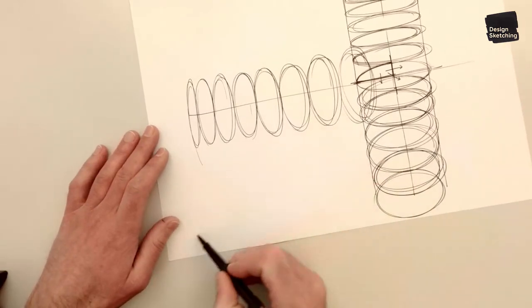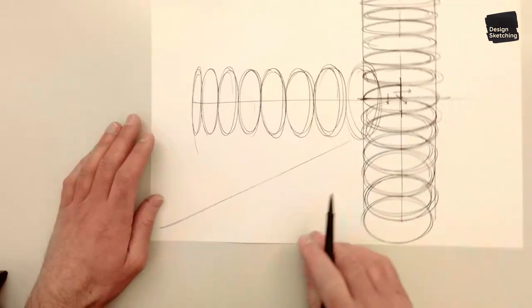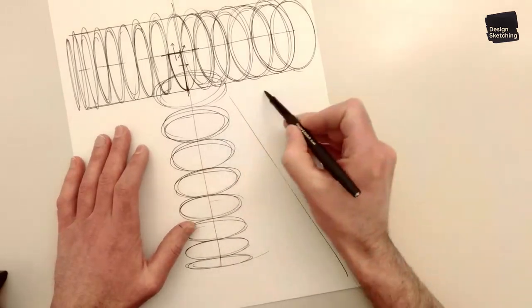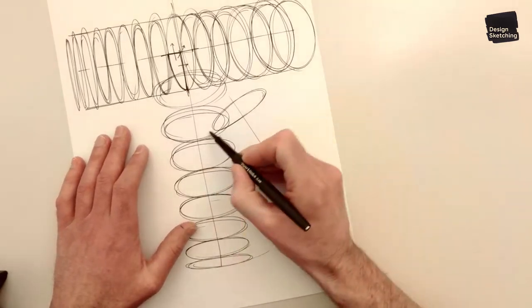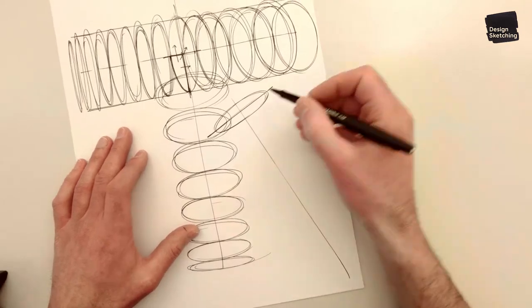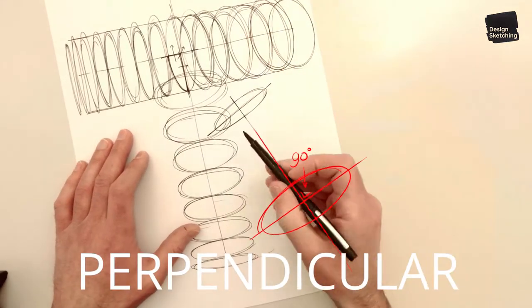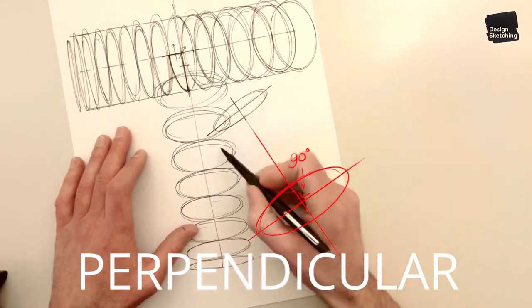And you can do this in any direction. So just draw a line, rotate the page in a more comfortable position, and make sure that the ellipse is always perpendicular to this axis here, to the center line.